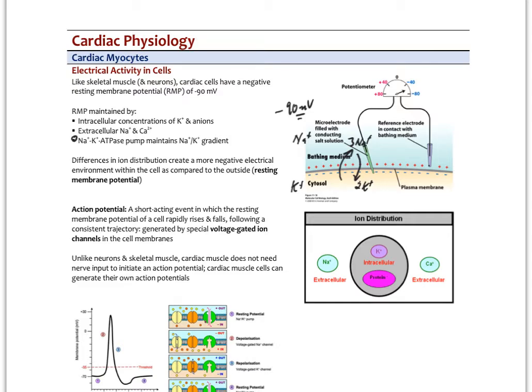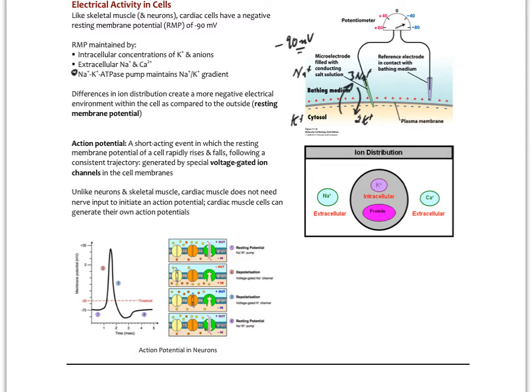At rest, skeletal muscle, cardiac muscle, and smooth muscle can also undergo an action potential — a short-acting event in which the resting membrane potential at a region of the membrane will rapidly change. Depolarization is when the resting membrane potential goes a little more positive on the inside, and hyperpolarization is when it goes more negative. These special cells have voltage-gated ion channels that allow them to create action potentials.